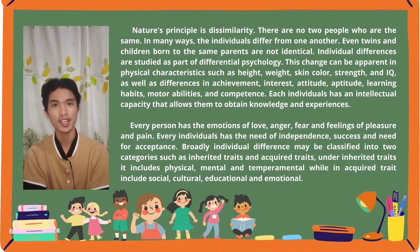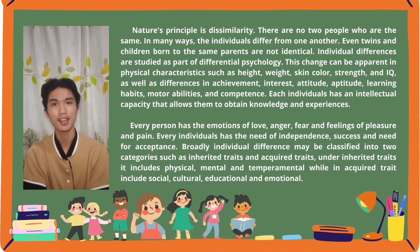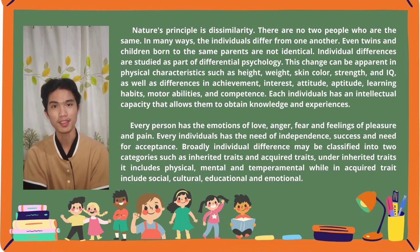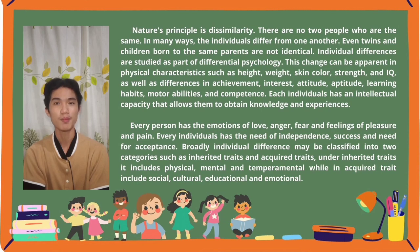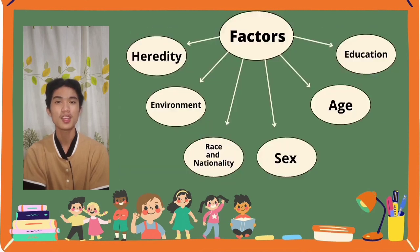Under inherited traits, it includes physical, mental, and environmental characteristics, while acquired traits include social, cultural, educational, and emotional aspects. There are six factors affecting the individual differences of children.